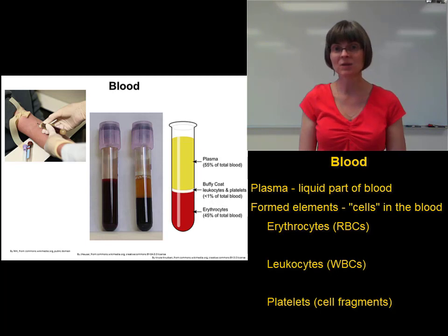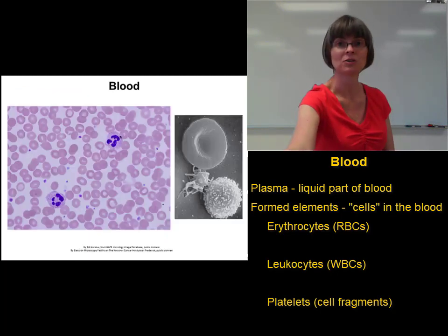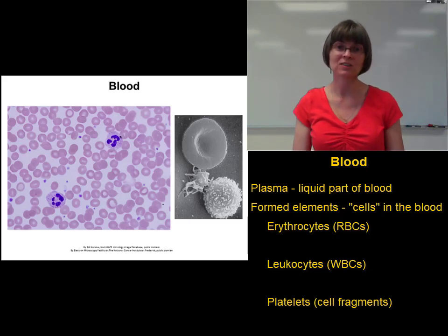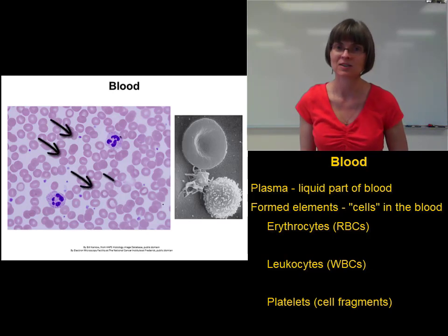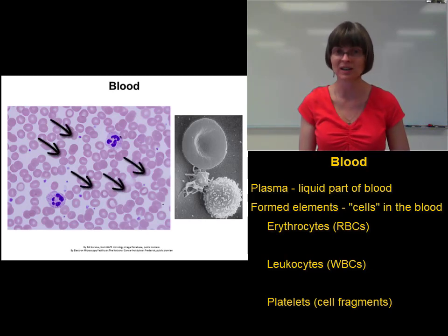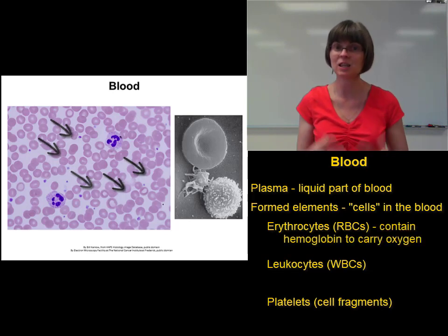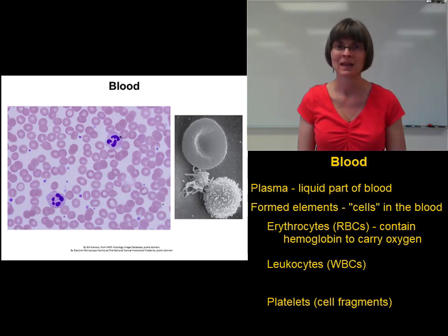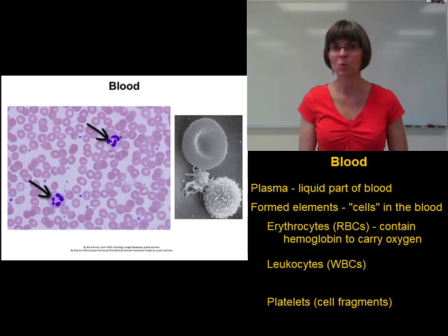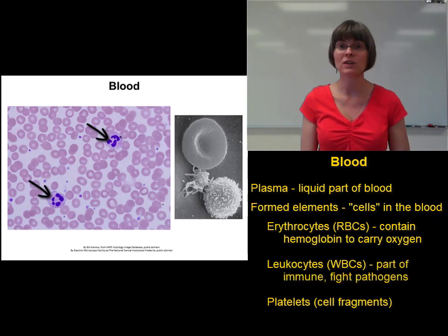We can see the different types of formed elements more clearly under a microscope. This slide has been stained so we can see the formed elements more easily. Most of what we see are round pink cells — the erythrocytes, or red blood cells. Erythrocytes are important because they carry oxygen; they contain hemoglobin that binds to oxygen to carry it from your lungs out to the rest of your body. The larger, darker purple cells are the leukocytes, or white blood cells, which are an important part of the immune system for fighting disease and protecting the body from harmful substances.